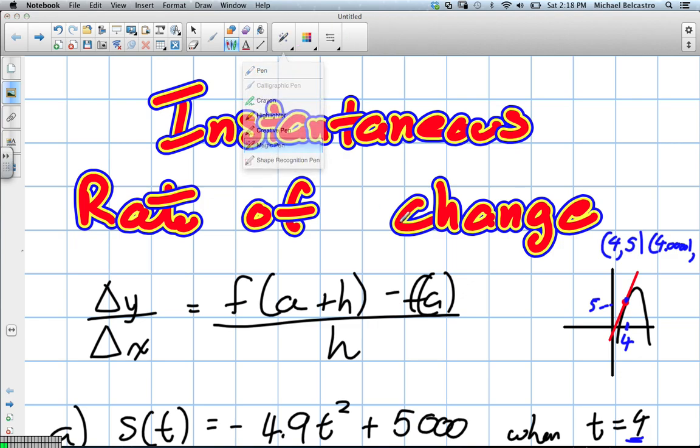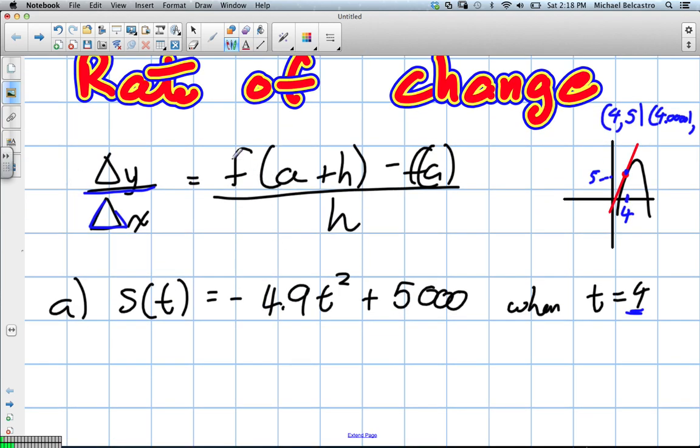But instead of doing that, we've developed a bit of a formula here. And this formula deals with the rate of change of y, so this triangle means change. Change in y divided by change in x, essentially that's what slope is. The way we figure it out is we take our function and we take our a value. Our a value is exactly where we are, so in this case 4 is our a value.